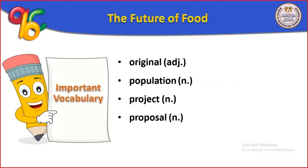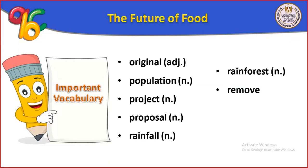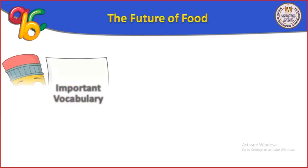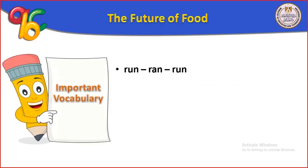Proposal (العرض), rainfall (سقوط الأمطار), rainforest (غابات كثيفة), remove (يزيل), researcher is someone who does research, reuse (إعادة استخدام), run (يجري), or run out of something (ينتهي), or run meaning يدير (to manage).